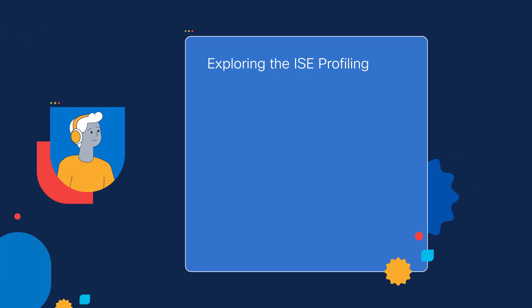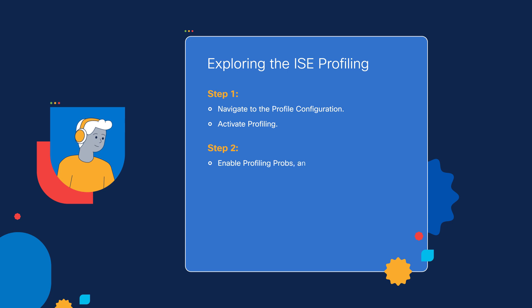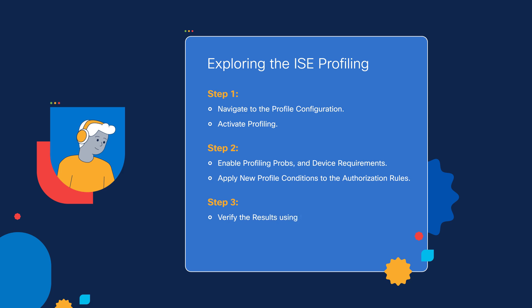As part of the process of exploring the Cisco ISE profiling feature, we're going to go through three steps. The first step requires us to navigate to the profile configuration and activate profiling. The second step requires us to enable the probes, which allows us to discover devices. We're also going to talk about some device requirements and show you how to configure the profiling feature to be utilized on your authorization rules. And then on step three, we're going to see the actual results.